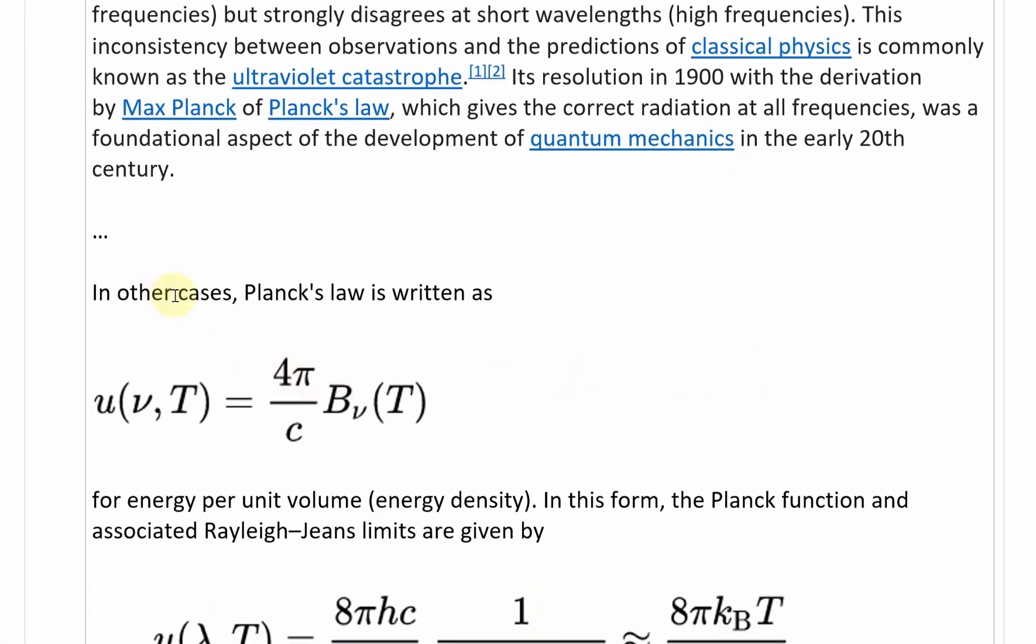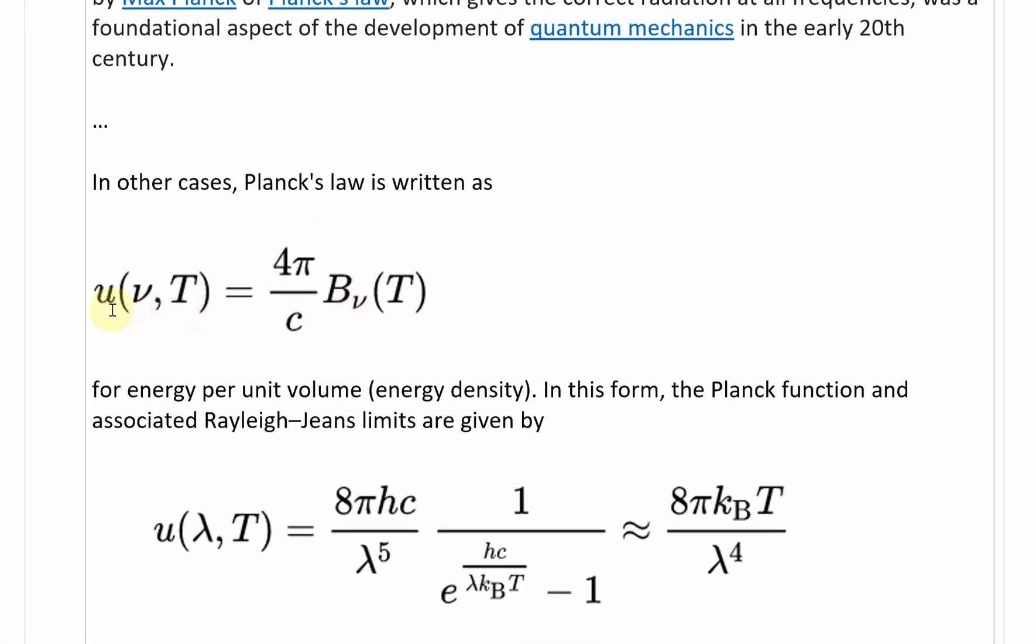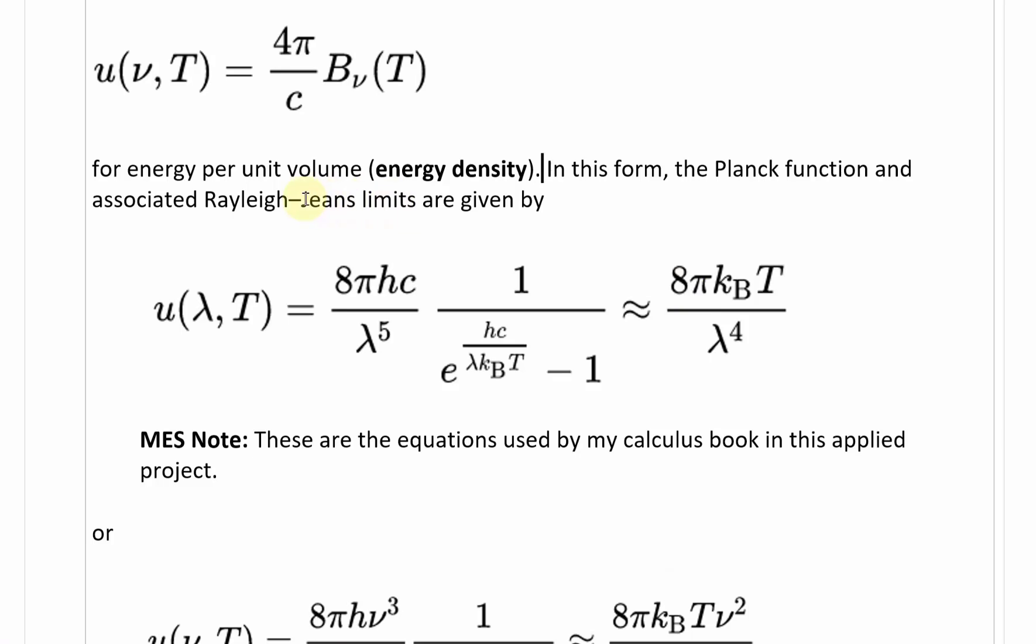Going further into that article, it says in other cases Planck's law is written as, you can write this as u(ν,T), frequency times temperature, equals 4π over C times the spectral radiance Bν(T), for energy per unit volume, in other words, the energy density. That's what we were graphing or solving in our applied project. In this form, the Planck function is u(λ,T) equals 8πHc divided by λ⁵ times 1 divided by e^(Hc/λKbT) minus 1. So this is our Planck's law.